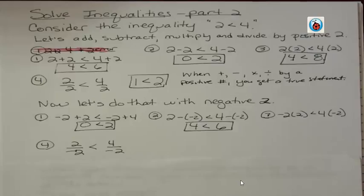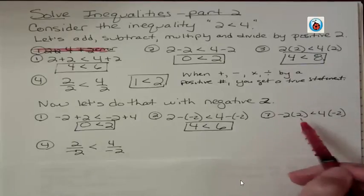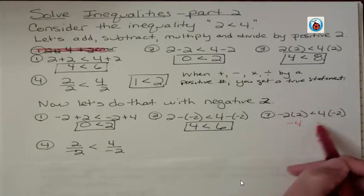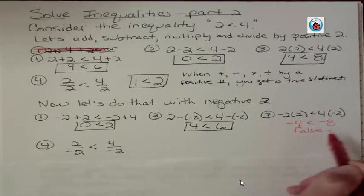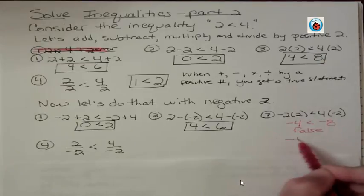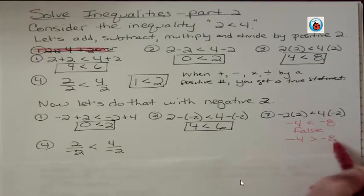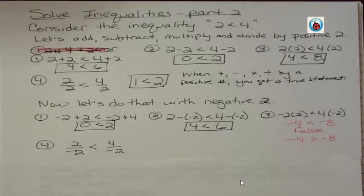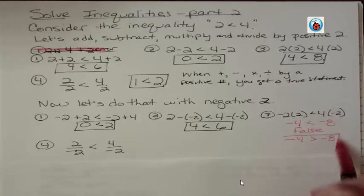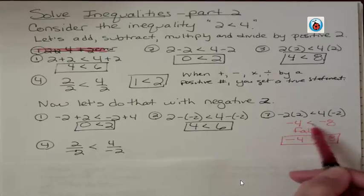But here comes trouble. If we multiply by a negative, 2 times negative 2 is negative 4, and 4 times negative 2 is negative 8. Negative 4 is not less than negative 8. That's a false statement. What should that statement be? Negative 4 is actually greater than negative 8, because negative 4 is not as far to the left, and left is less. So in order to make this false statement true, we had to change the arrow from less than to greater than.